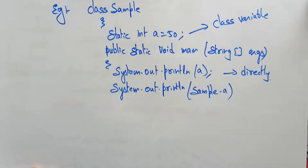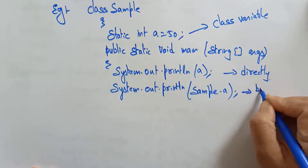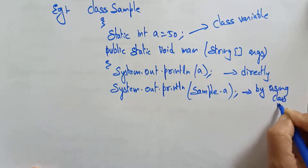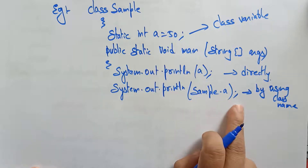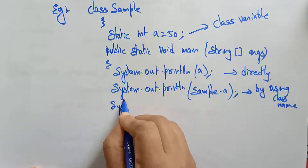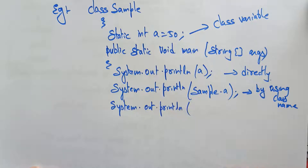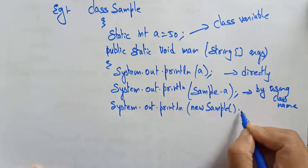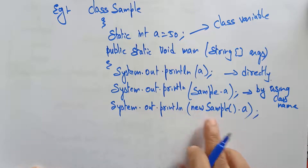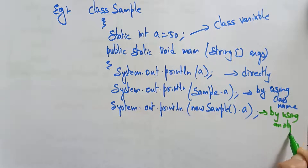Next: System.out.println(Sample.a) — here 'Sample' is the class name. So this is accessing the class variable by using the class name. Then: System.out.println(new Sample().a) — this is accessing the class variable by using an object.